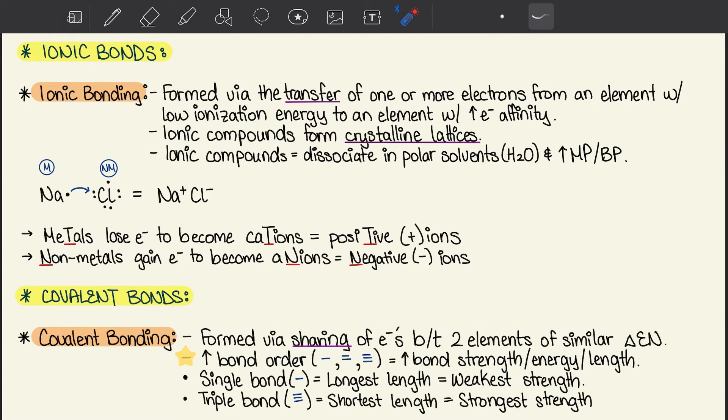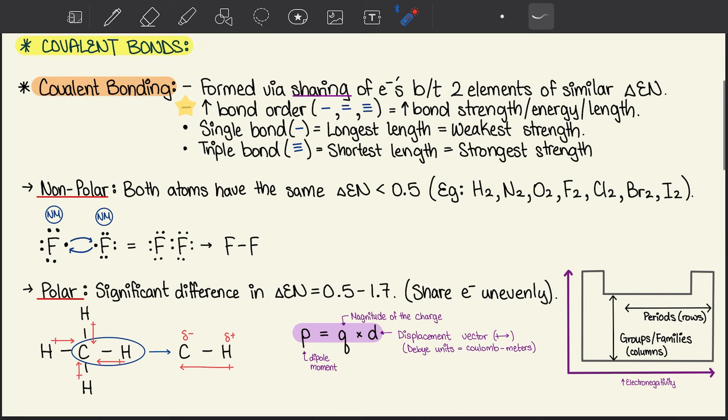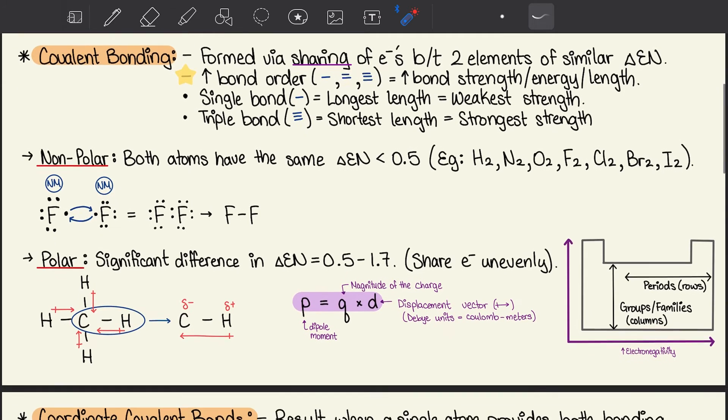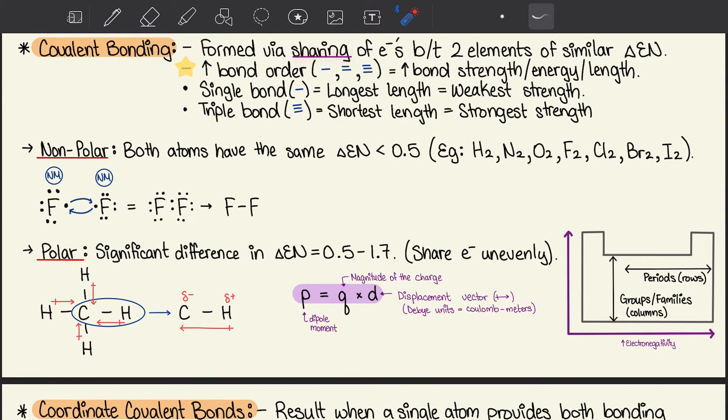Moving on to covalent bonds. Covalent bonding is formed by a sharing of electrons between two elements of similar electronegativities. The increase in bond order increases bond strength, energy, and length. Bond order refers to the number of bonds. So with single bonds, they have the longest length and the weakest strength, whereas triple bonds have the shortest length but the strongest strength.